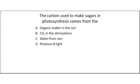The carbon used to make sugars in photosynthesis comes from the organic matter in the soil, CO2 in the atmosphere, water from rain, or photons of light?